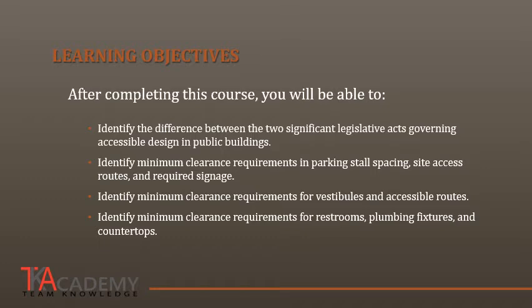Here are the learning objectives for this course. After completing this course, you will be able to identify the differences between the two significant legislative acts governing accessible design in public buildings. Identify minimum clearance requirements in parking stalls, spaces, site access routes, and required signage. Identify minimum clearance requirements for vestibules and accessible routes. And identify minimum clearance requirements for restrooms, plumbing fixtures, and countertops.